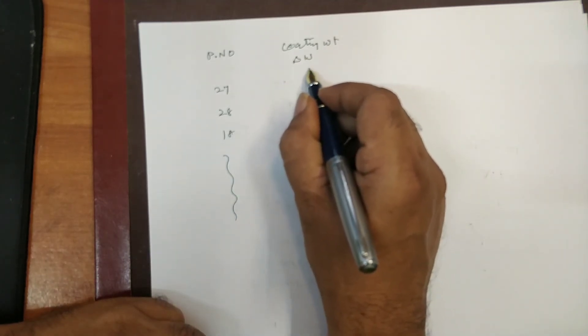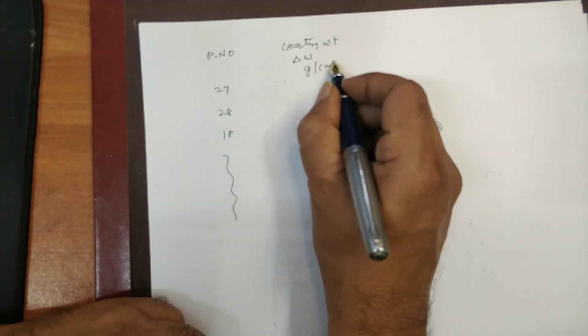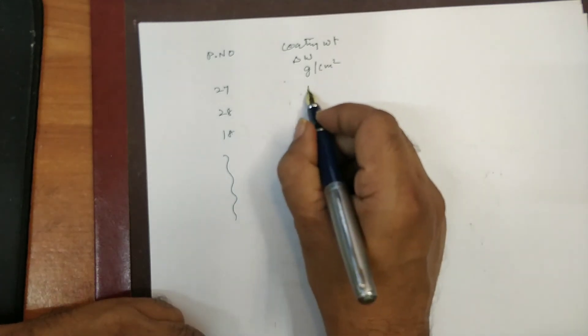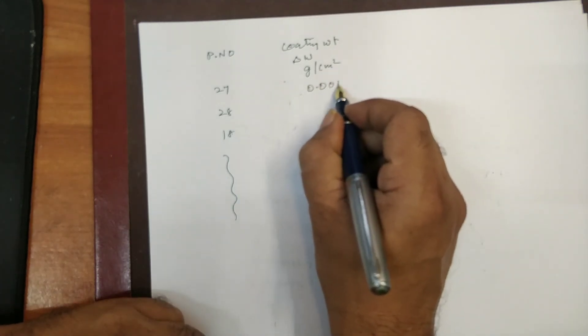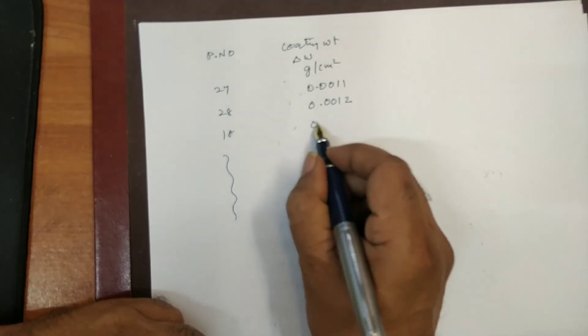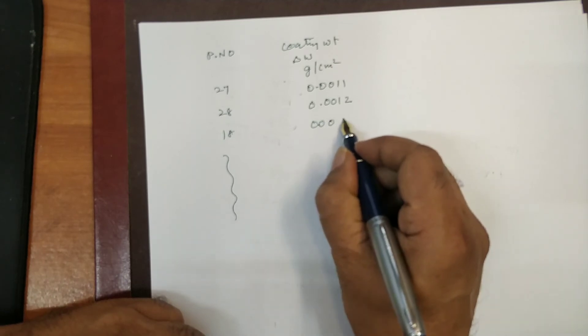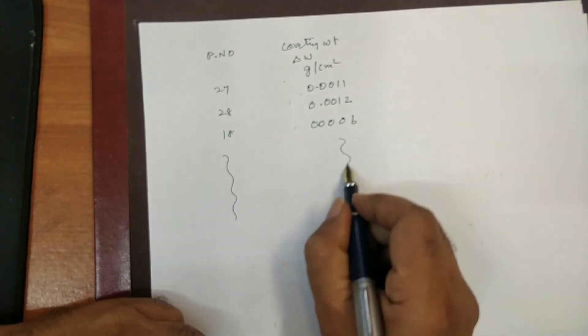So, that is actually that is per square meter I have converted. So, gram per square meter I have converted. So, it is around 0.0011 and 0.012. Similarly, 0.00 that is 0.006 likewise.